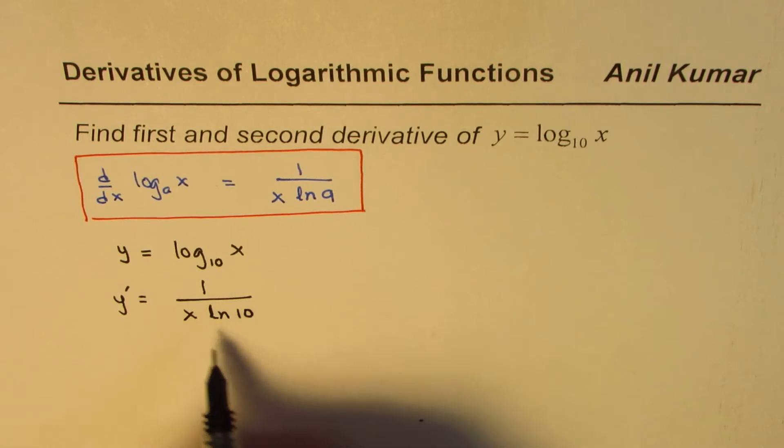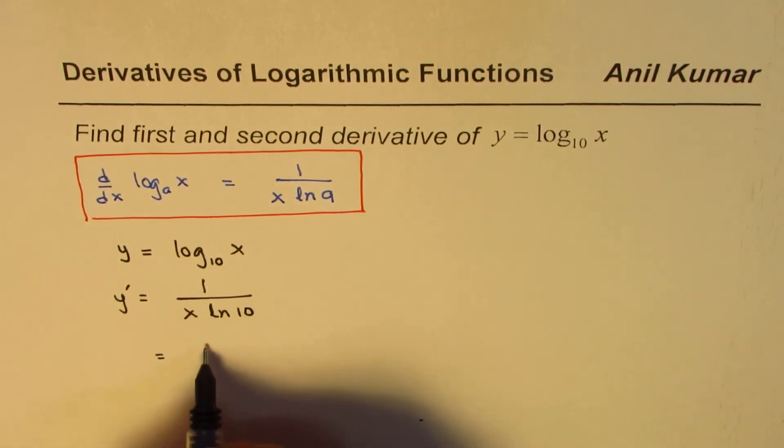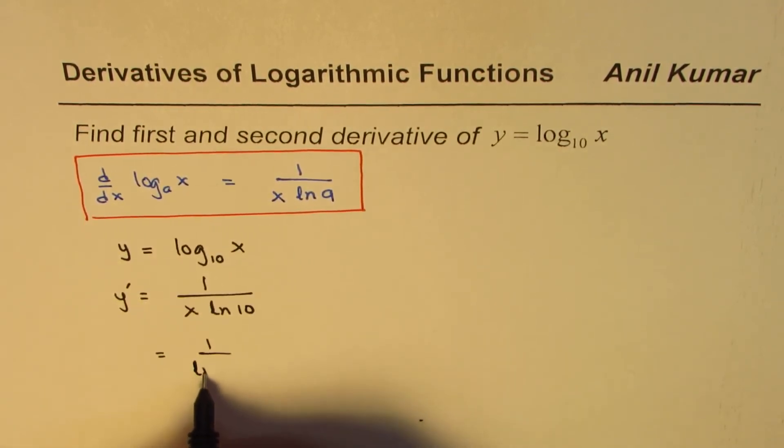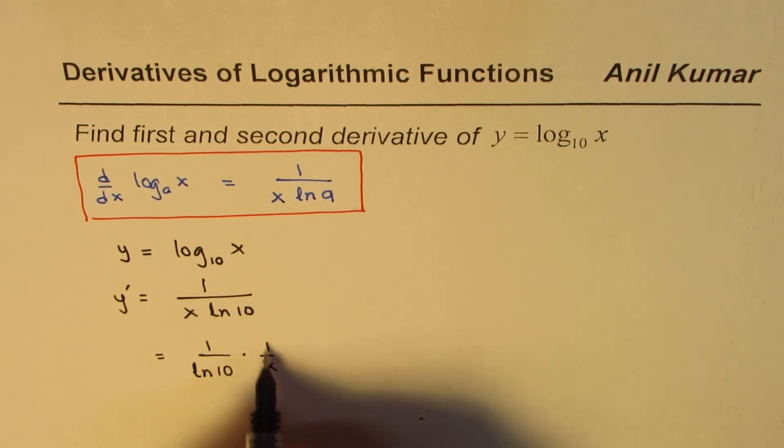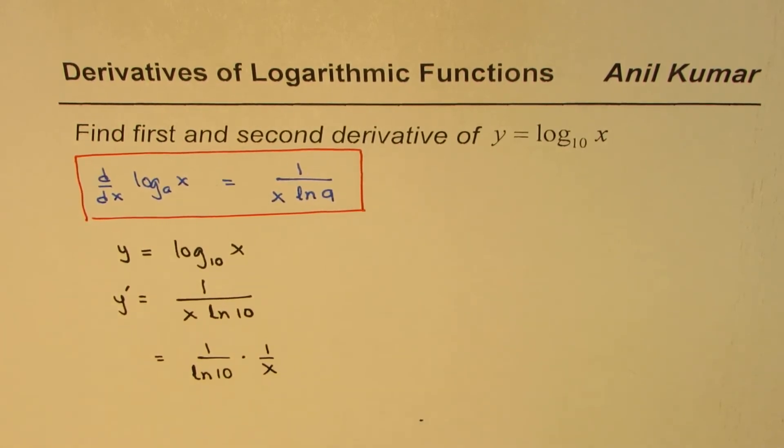Now, this is like a constant. So you could write this as 1 over ln 10 times 1 over x. So this is the variable part. So that becomes the first derivative for the given function.